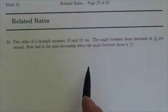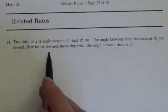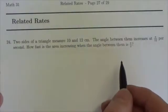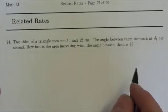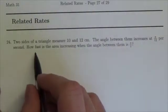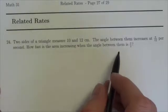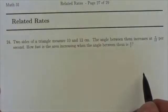In this related rates problem we read that the two sides of a triangle measure 10 and 12 centimeters. The angle between them increases at π/12 radians per second. How fast is the area increasing when the angle between them is π/2?